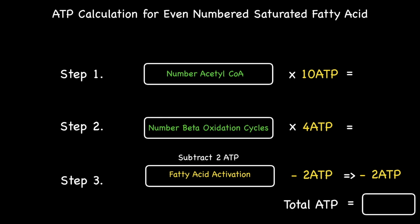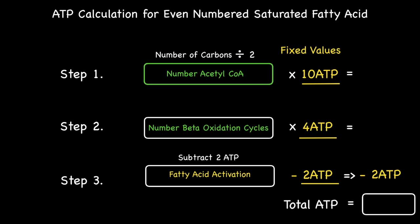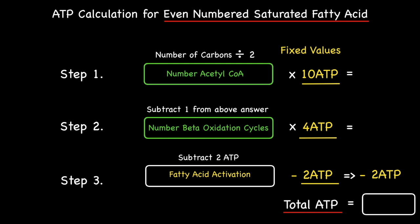So in summary we have three fixed values: 10 ATP for each acetyl-CoA produced, 4 ATP for each beta-oxidation cycle, and 2 ATP subtracted to account for fatty acid activation. In addition, there are two variable values dependent on the number of carbons: the number of acetyl-CoAs, calculated by dividing the number of carbons by two, and the number of beta-oxidation cycles, which is one less than this number. Using this template you can calculate the number of ATPs from any even-numbered saturated fatty acid as long as you follow the steps in sequence.